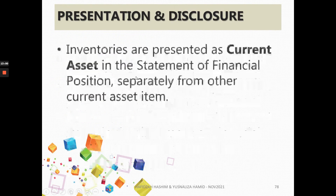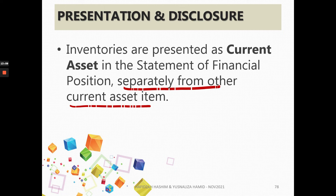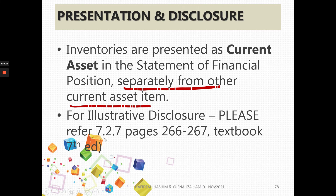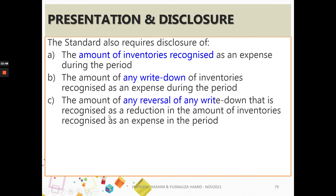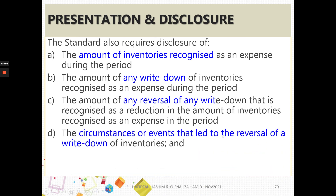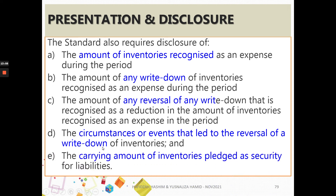For presentation and disclosure: inventories are presented as a current asset, presented separately from other current asset items, but may have breakdowns such as work in progress, finished goods, and raw materials. Refer to section 7.2.7, pages 266 to 267 of the textbook for illustrative disclosure. The disclosure requirements of the standard include: recognizing inventories as an expense during the period the sale took place; recognizing any write-down as an expense; recognizing reversal of write-down as a reduction in the amount of inventories; disclosing circumstances or events leading to the reversal; and disclosing the carrying amount of inventories pledged as securities for liabilities.